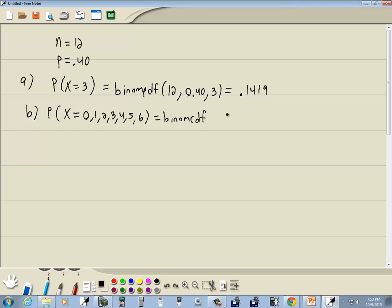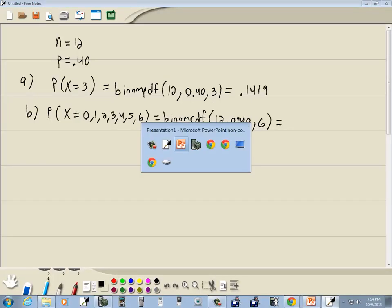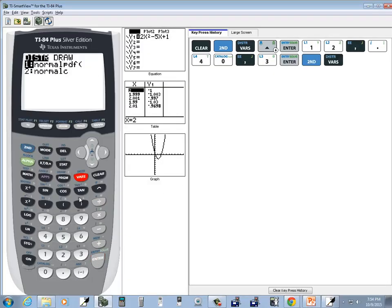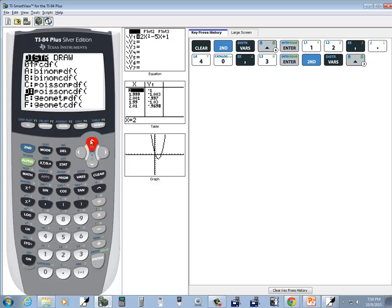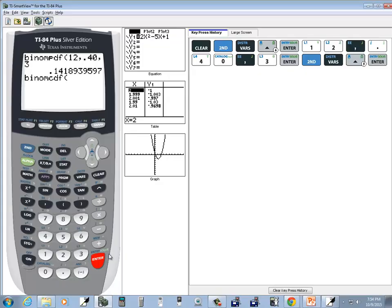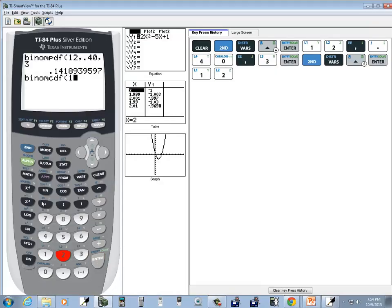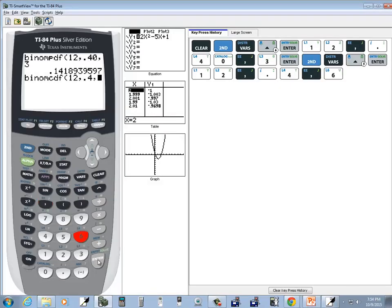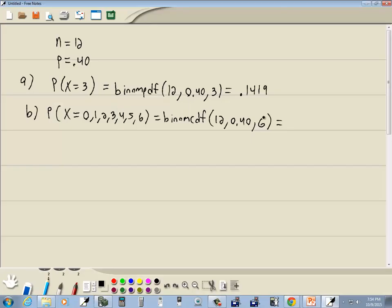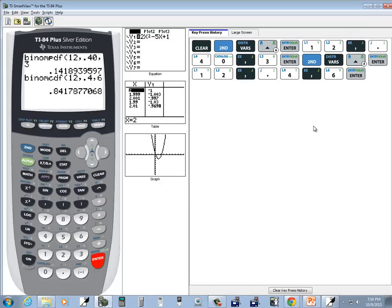So do binomCDF. We'll put in n which is 12, p which is 0.40, and then the ending number when we go from 0 up to a number, so we'll put in 6. Second vars, I'll do an up arrow to get there relatively fast. BinomCDF, then we'll put in 12, comma, 0.4, comma, 6, and then press enter. At four decimal places, the fifth one's an 8, so it means we're going to round up. This would be 0.8418.